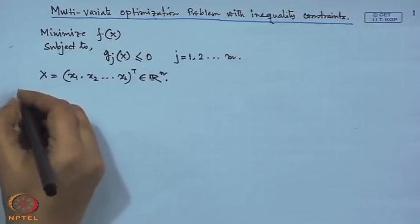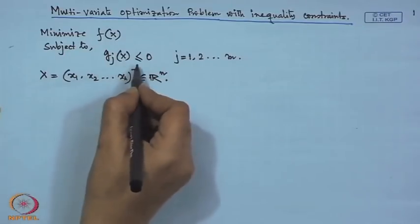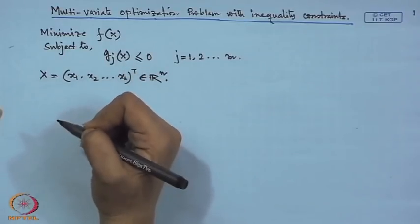For this non-linear programming problem, the problem may have several minima. But there are certain unique conditions when the problem has a unique global optimum. We will formulate the Lagrange function and derive the necessary conditions, just as we do for classical optimization problems.